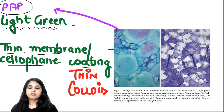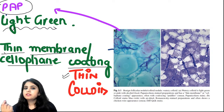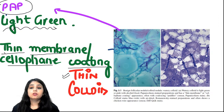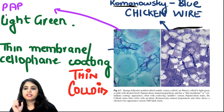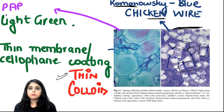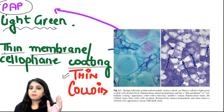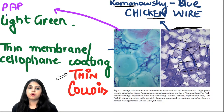The same thin colloid on Romanovsky stain appears blue with a chicken-wire pattern. So to summarize: thin colloid on Pap stain is green, cellophane paper appearance; thin colloid on Romanovsky stain is blue with a chicken-wire pattern.